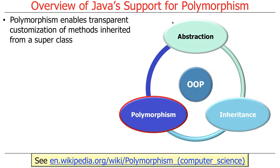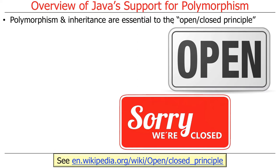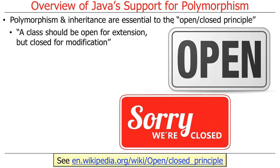Polymorphism enables transparent customization or specialization of methods that are inherited from a superclass — that's the key mystical part. These features are used to implement a very important design principle called the open-closed principle. The open-closed principle says a class should be open for extension — you can modify and customize its behavior — but closed for modification. Ideally, the interface of the superclass is relatively fixed, maybe very fixed, never changes, so you can always count on the interface being the same even though the implementations may change.